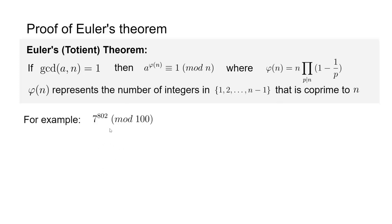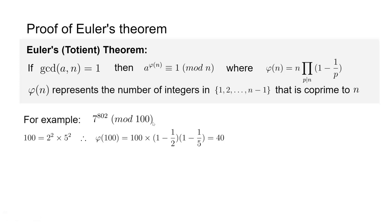For example, if we want to know the last two digits of 7 to the power of 802, we basically want to calculate this number modulo 100. Notice that 100 and 7 are coprime, so we can apply Euler's totient theorem directly. First we calculate φ(100). Since 100 = 2² × 5², we get φ(100) = 100 × (1 − 1/2) × (1 − 1/5) = 40.